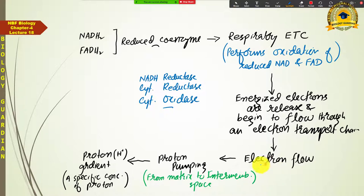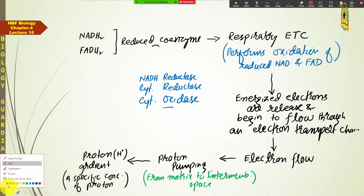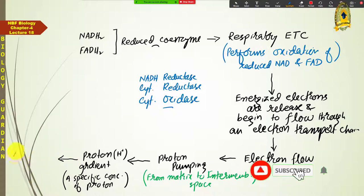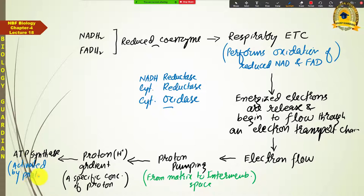After protons are pumped and accumulate in the inter-membrane space, this accumulation is called the proton gradient — the specific concentration of protons in the inter-membrane space. This proton gradient activates the ATP synthase, which is a component present in the inner mitochondrial membrane.